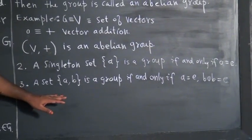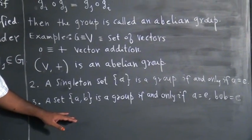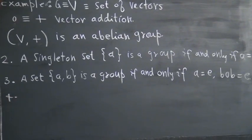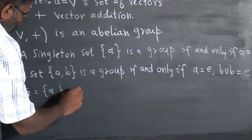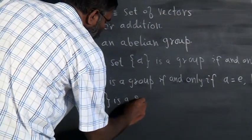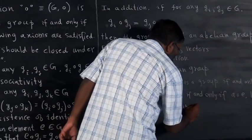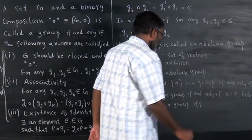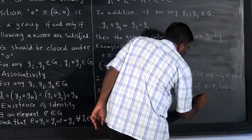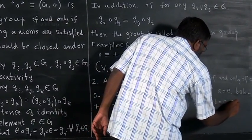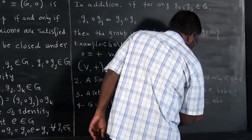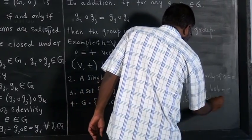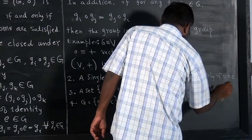We will ask a question to determine conditions under which a set of elements becomes a group. For example, you can ask: if G equals the three-element set {A, B, C} is a group, if and only if — sometimes we shorthand write IFF — A equals E, B∘C equals A, B∘C equals E. We can examine these things in the tutorial.